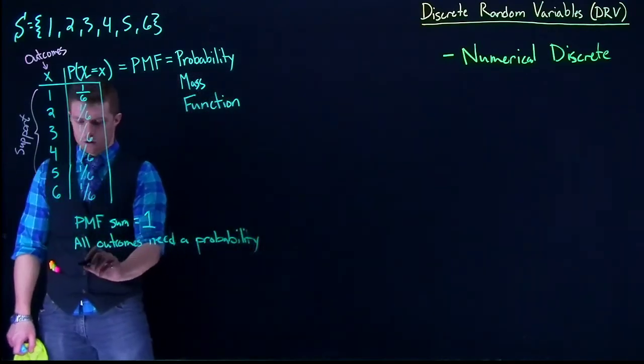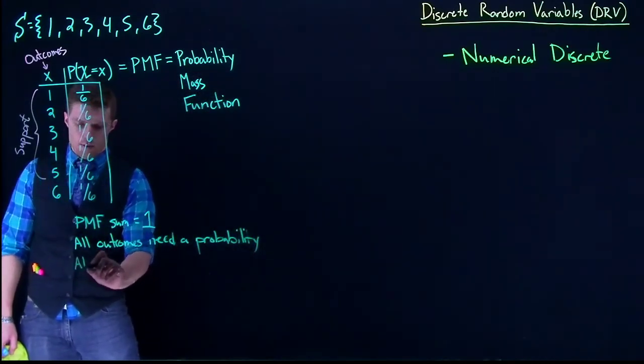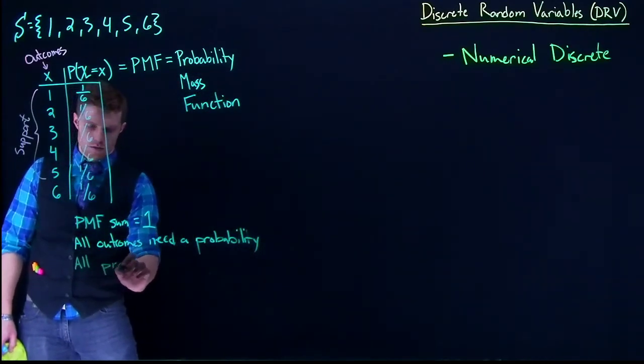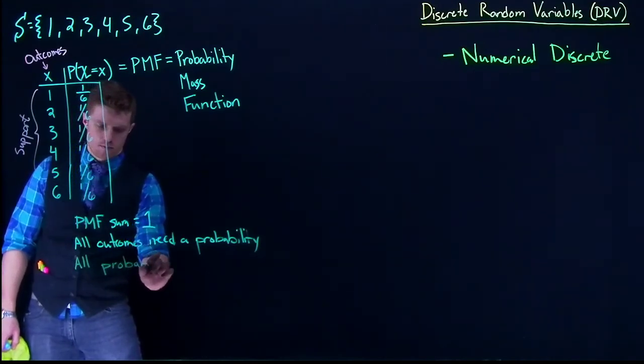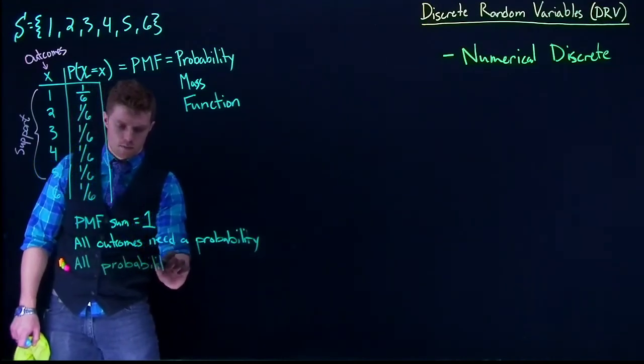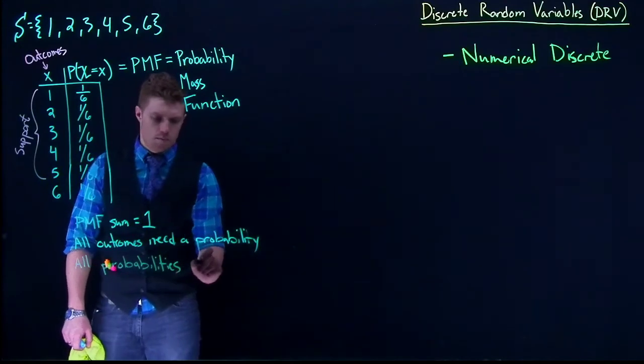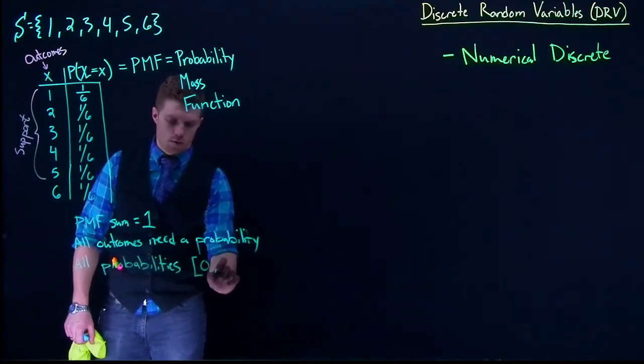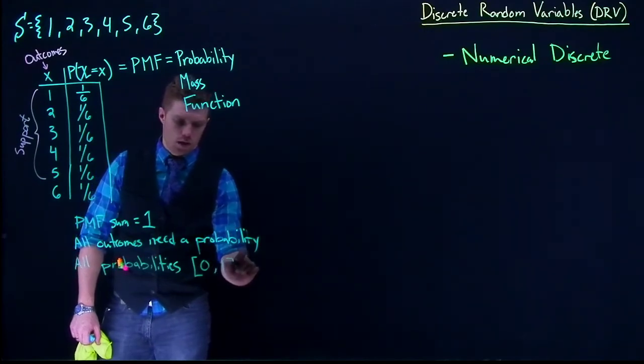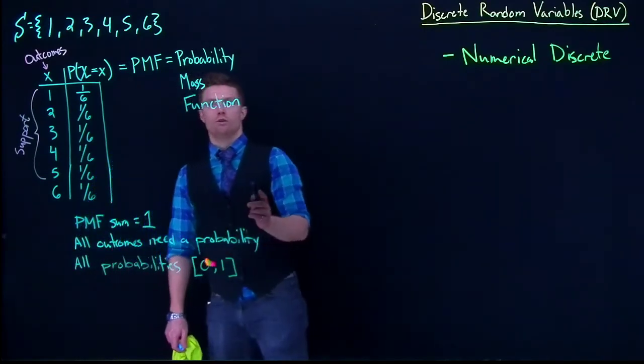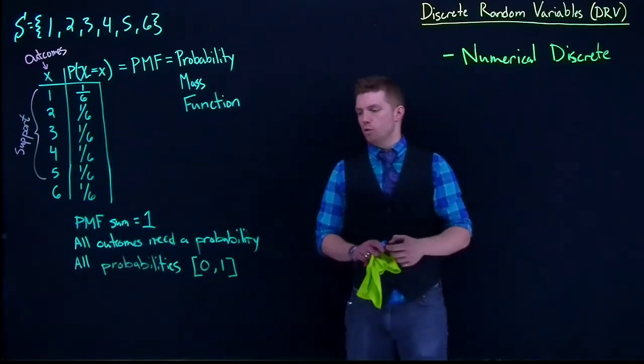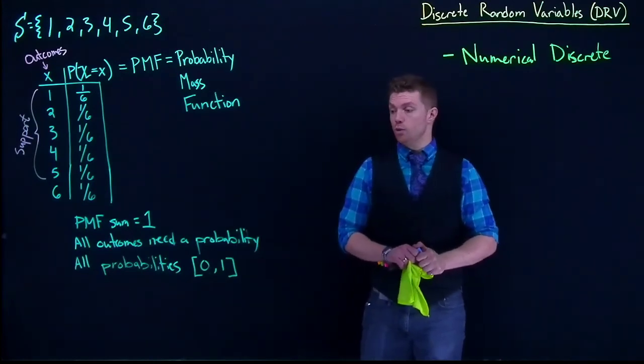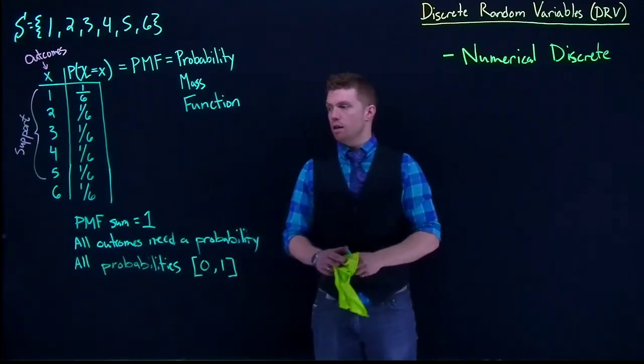And then one more, all probabilities must be between 0 and 1 inclusive. Notice how I use those square brackets. The square brackets mean we include the values 0 and 1.